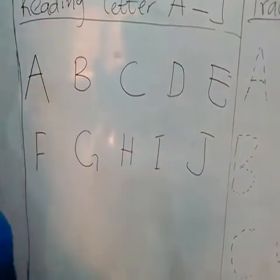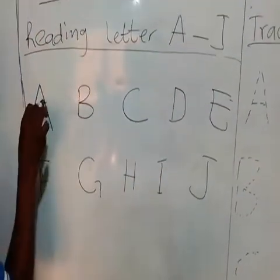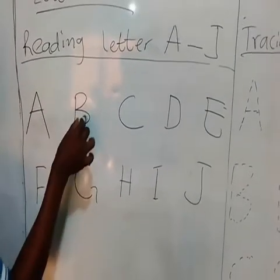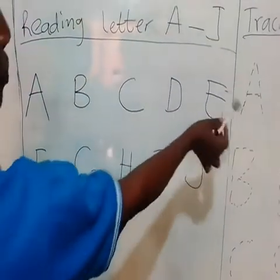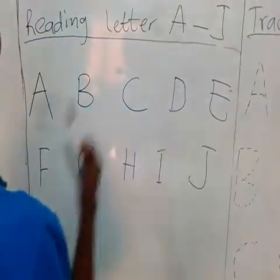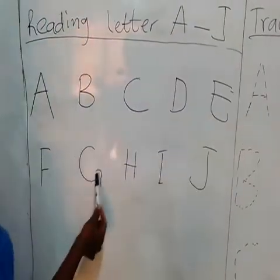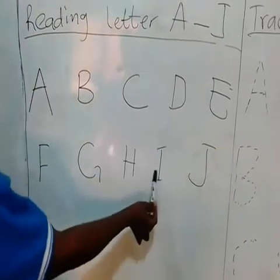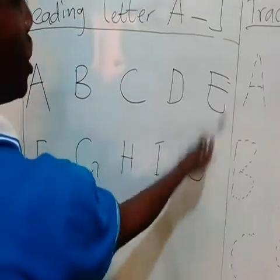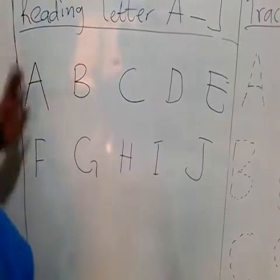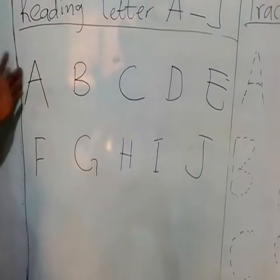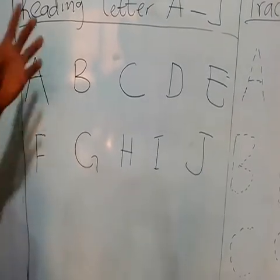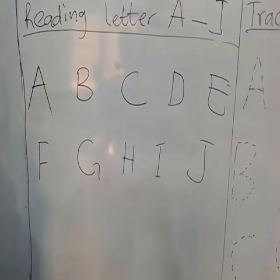Let's read it again. A, B, C, D, E, F, G, H, I, J. A here is for abu.